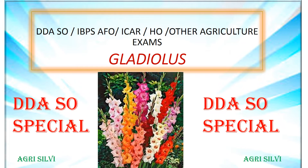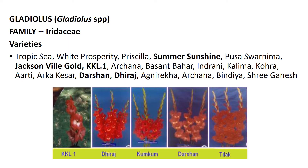Then compare gladiolus. This video is specially dedicated for DDA-SO, IVPS-AFO, or those people who are keeping horticulture as specialization in ICR-JRF, SRF and any other competitive examination. The family of gladiolus is Iridaceae. Some important plants of Iridaceae you should know: irises, crocus, gladiolus and blue-eyed grasses — these all belong to the Iridaceae family.